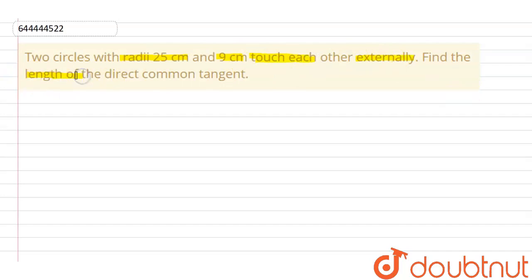In this question we need to find the length of direct common tangent of two circles with radii 9 cm and 25 cm that touch each other externally. Now let us consider this is our bigger circle with radius 25 cm and smaller circle with radius 9 cm.